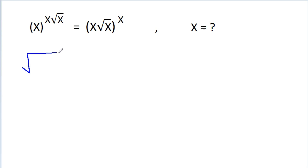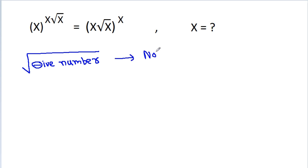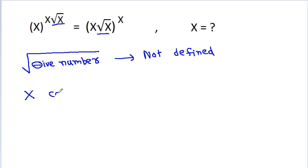A square root of a negative number is not defined. And we have a square root of x here, so x cannot be negative.